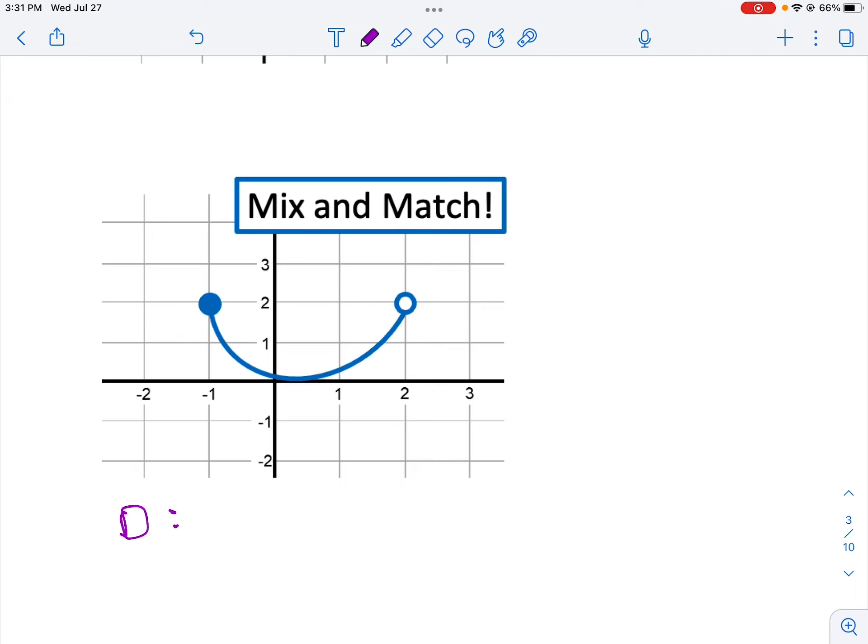So I'll start with my domain for x. Let's back it up here. x such that, notice I'm including negative 1, so I'm going to say negative 1 is less than or equal to x. Now notice it goes up to 2 but doesn't include it, so we'll just say less than 2.